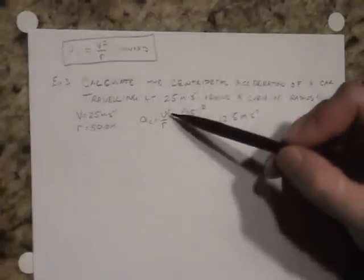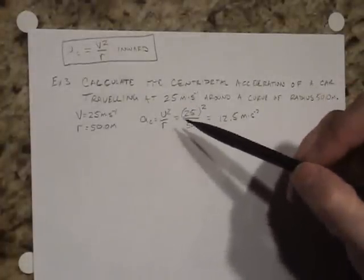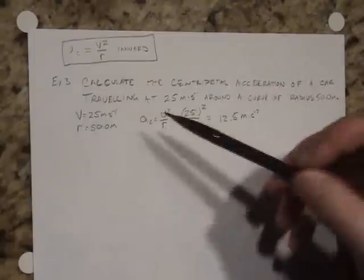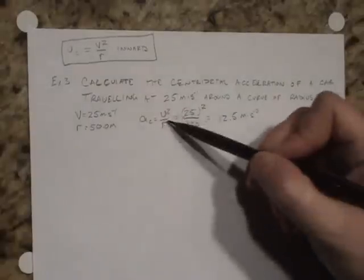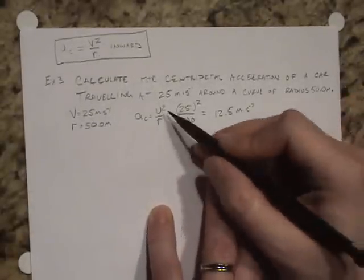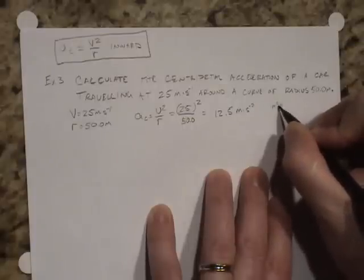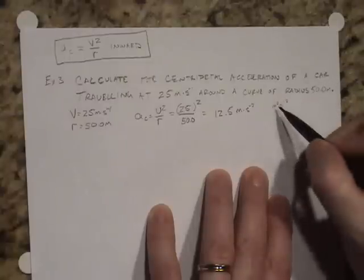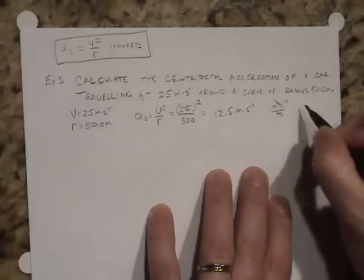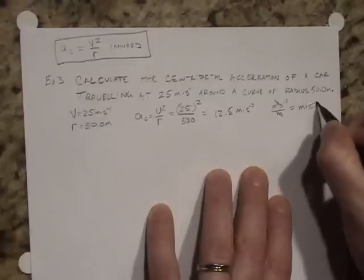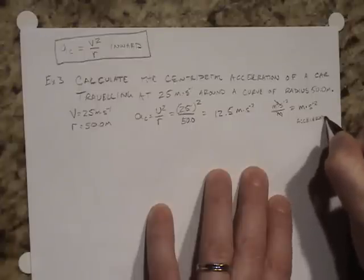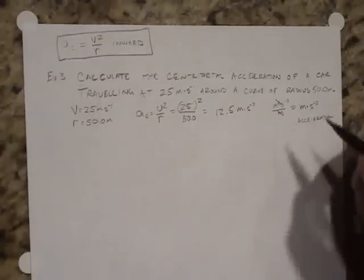The formula is v squared over r. Although this is a new kind of acceleration called centripetal acceleration, it should still produce the same units we've seen for acceleration before — that is, meters per second squared. Let's double-check that v squared over r actually produces units of meters per second squared. V squared would be meters squared per second squared. Dividing by meters, the meters cancel, and that produces meters per second squared. This is acceleration, so this new formula does produce the correct units.